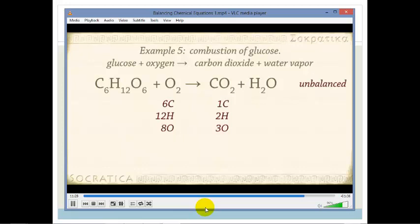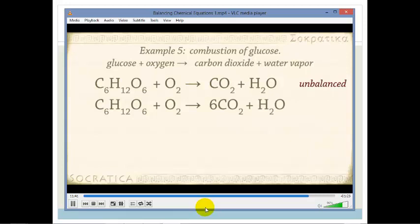Start by putting a coefficient of 6 in front of the CO2 to balance the number of carbons and recount. C6H12O6 plus O2 yields 6CO2 plus H2O. On the left we have still 6C, 12H and 8O. On the right we have 6C, 2H and 13O. Let's put a 6 in front of the H2O to balance the number of hydrogens and recount.